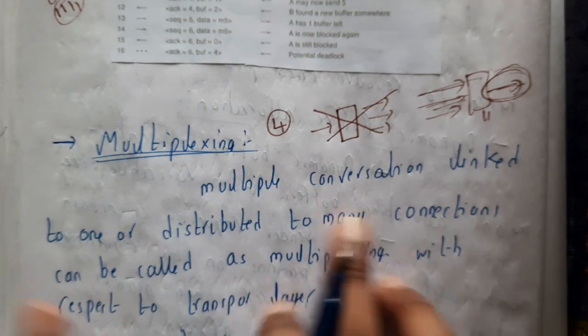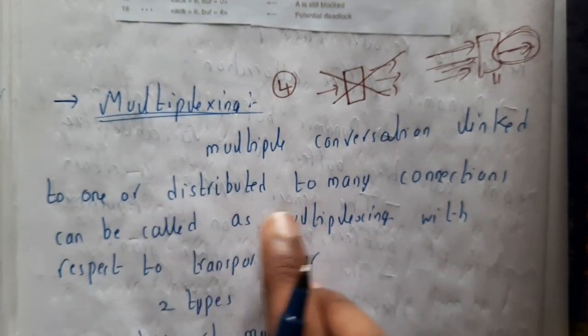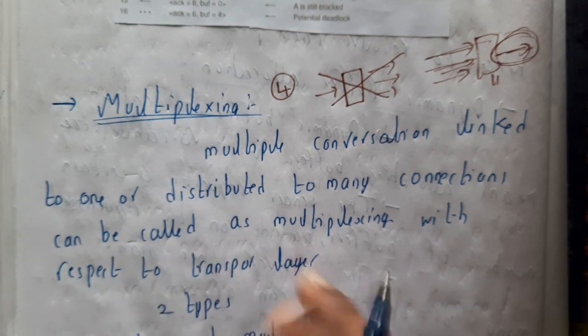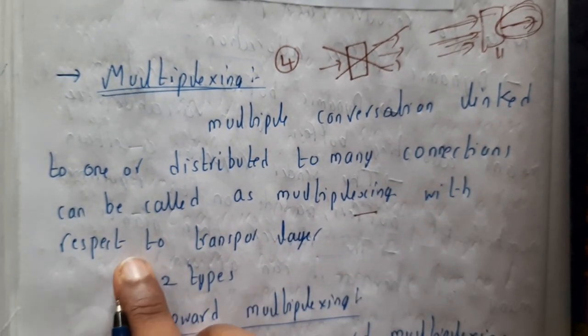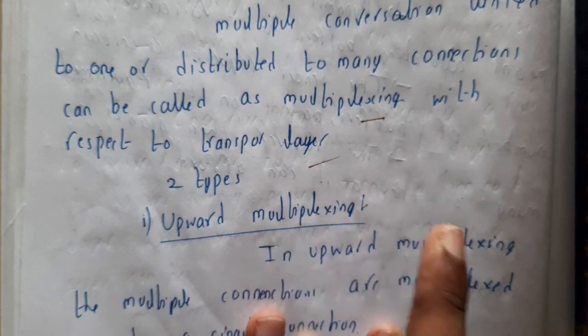Multiple conversations linked to one or distributed to many connections is called multiplexing with respect to transport layer. We are having two approaches: upwards and downwards.